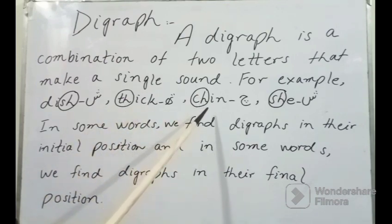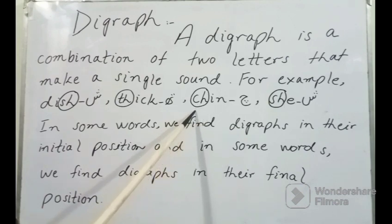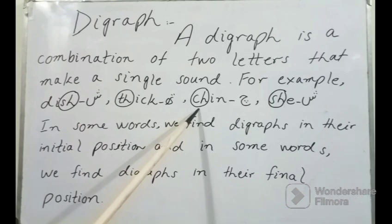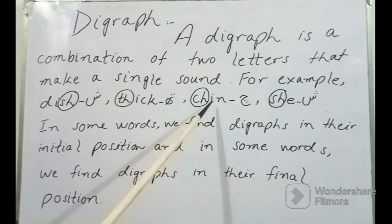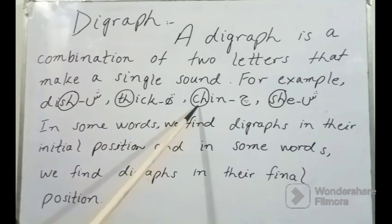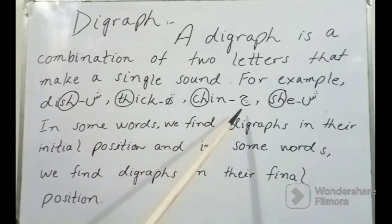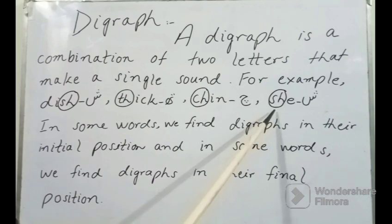Now we have the word chin. CH-I-N, chin. You can clearly see the use of CH. This is digraph, CH form کرتا ہے che کی آواز کو۔ پھر اس کے بعد ہمارے پاس she. She میں SH again sheen کی آواز کو form کر رہا ہے۔